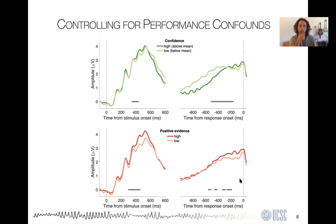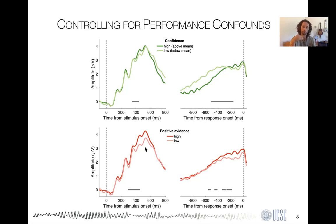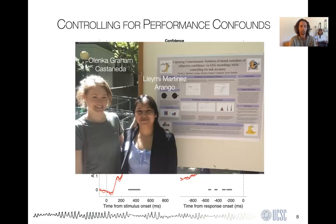The really novel result is that in the relative blindsight paradigm, where we dissociated confidence from accuracy, the CPP still shoots up faster in the high positive-evidence condition — which was associated with higher subjective reports of confidence but no change in objective accuracy. So the signature of evidence accumulation tracks subjective awareness even when you control for objective performance — a weaker, milder form of blindsight. This experiment was conducted in my lab by two undergraduate students, Alenca Graham Castaneda and Yemi Martinez-Arango; Alenca is now a PhD student with Megan Peters.